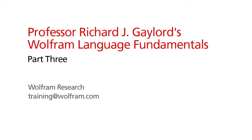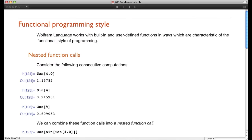Now that we've described how one creates programs and writes rules in the Wolfram language, I'd like to discuss programming style. Many people are used to procedural programming — the kind of programming you see when you write a program in C, BASIC, or Python. There's another style called functional programming, which is less commonly used, although it's becoming more significant every day.